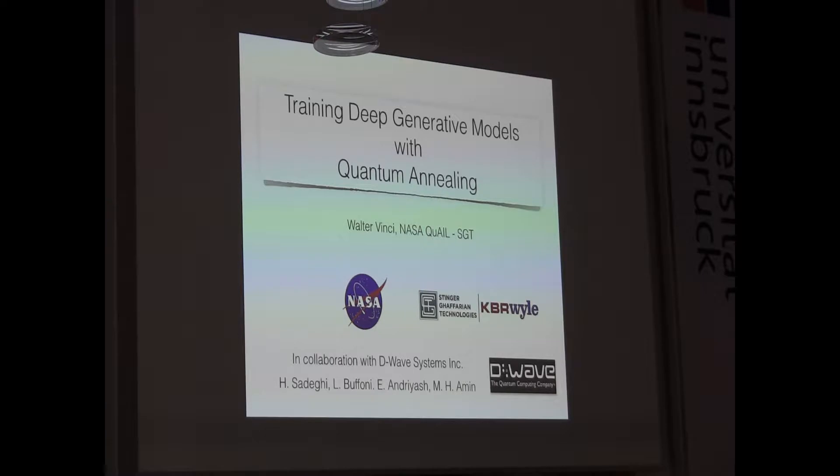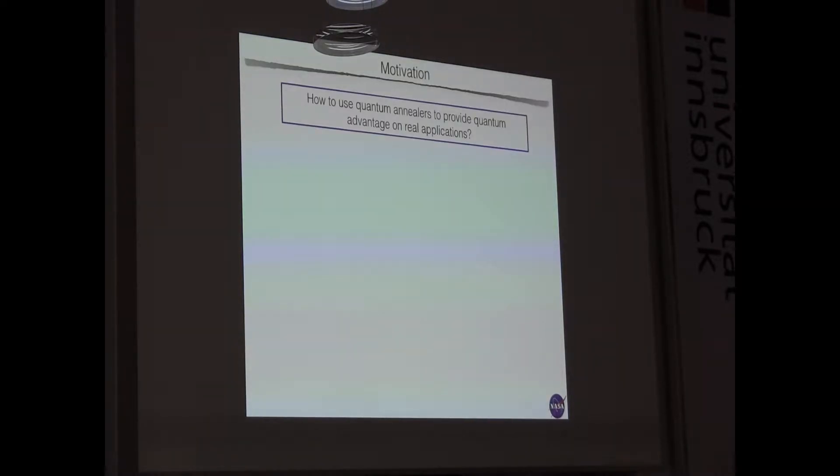This is part of the sustained interest of NASA Quantum Artificial Intelligence Lab to understand how quantum technologies can help in machine learning and artificial intelligence related problems. Maybe you are interested in this question, and I think I pick up where Cathy left: How can we use quantum annealers to provide a quantum advantage, broadly defined, on some real application you are interested in?